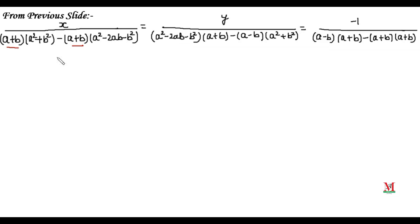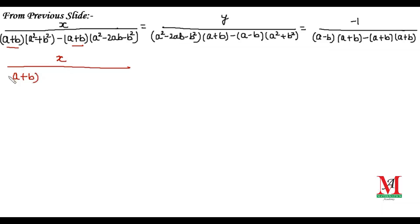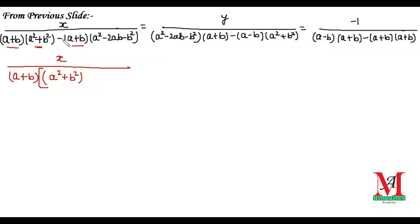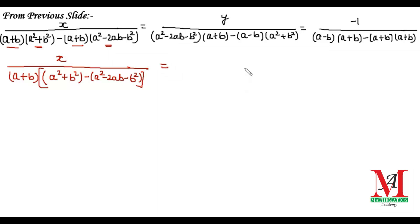In the denominator portion for x, we see that (a + b) is common, so we take (a + b) outside the bracket. We are left with (a² + b²) in the first bracket and minus (a² − 2ab − b²) in the second bracket. Moving towards y, there is no common factor so we must multiply out all the terms.